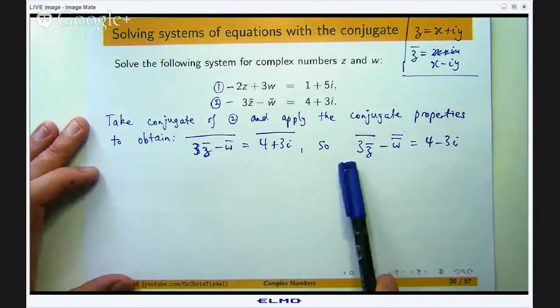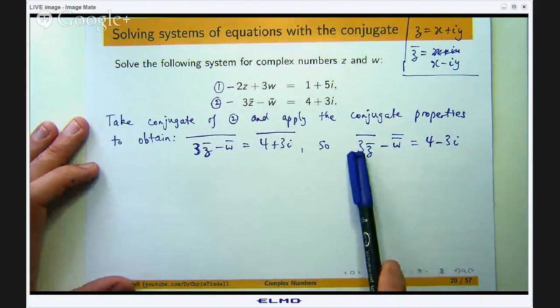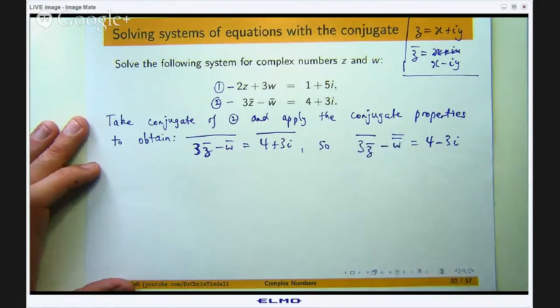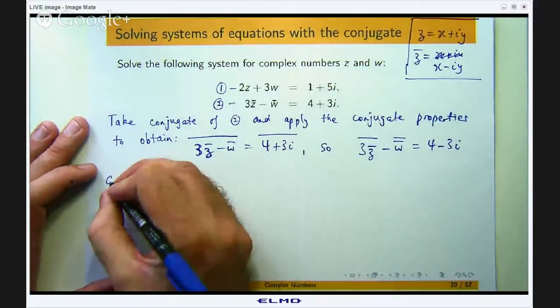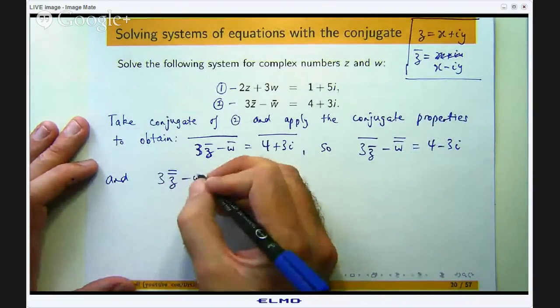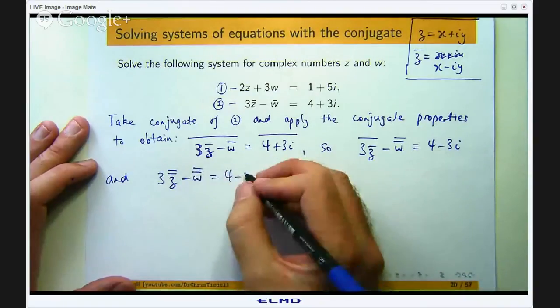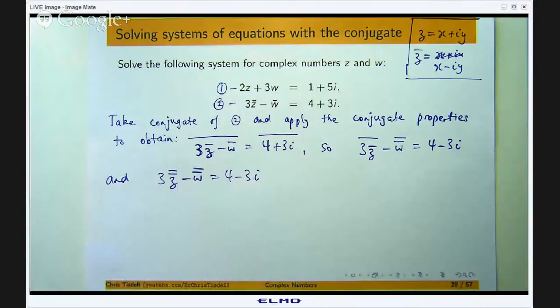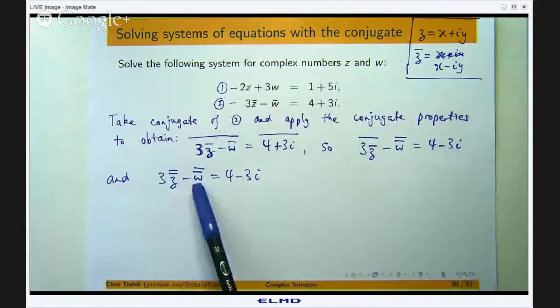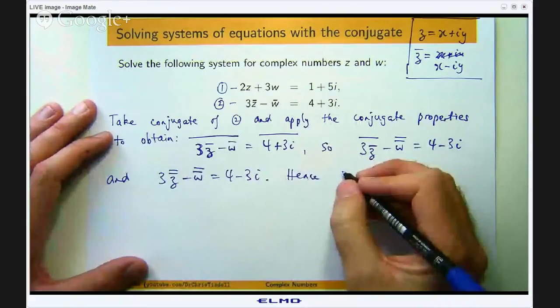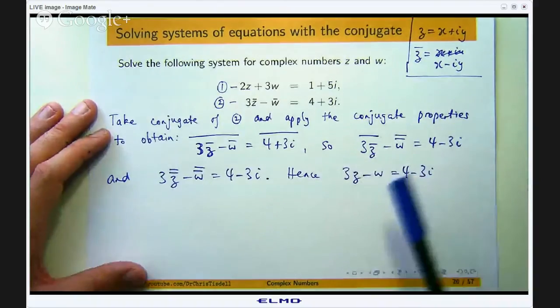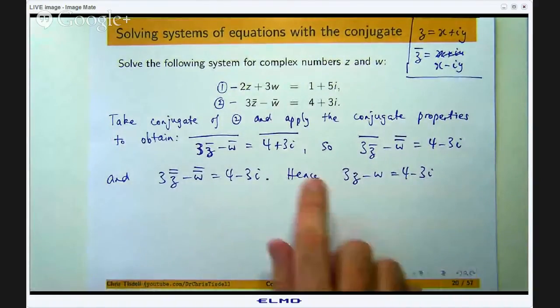Now over here I have got the conjugate of a complex number multiplied by a real number that is just the real number multiplied by the conjugate. So I am going to get 3 times z bar bar and over here I have got w bar bar and over here I have just got 4 minus 3i. Now the conjugate of the conjugate, you can just get rid of the two bars. So this will become z and this will become w. So now we have an equation that is in a far more compatible form with 1.